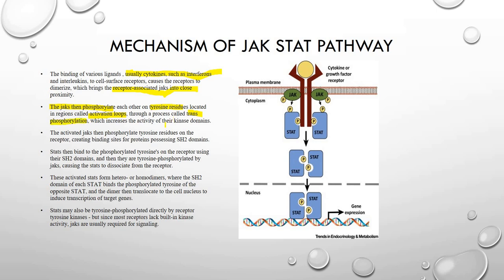Transphosphorylation increases the activity of the kinase domains. The activated JAKs then phosphorylate the tyrosine residues, creating a binding site for proteins possessing the SH2 domain — an SH2 domain is formed, as we have seen in the transmembrane enzyme-linked receptor. The STATs then bind with the phosphorylated tyrosines on the receptor via SH2 domains, and then are tyrosine-phosphorylated by the JAKs, causing the STATs to dissociate from the receptor. The activated STATs form hetero- and homodimers, where the SH2 domain of each STAT binds with the phosphorylated tyrosine of the opposite STAT.